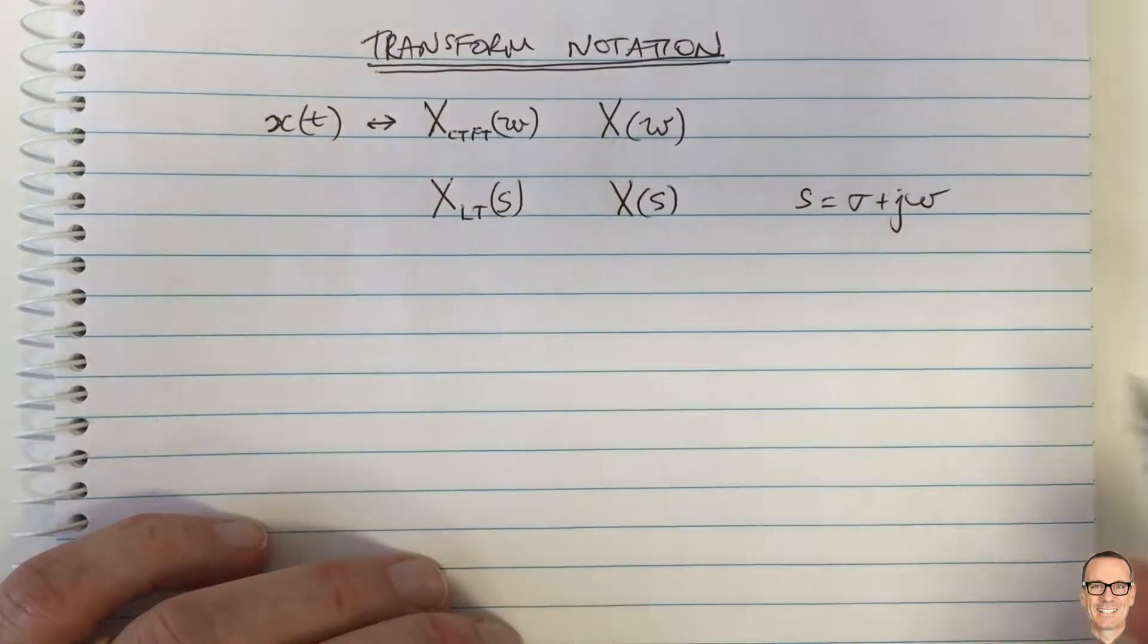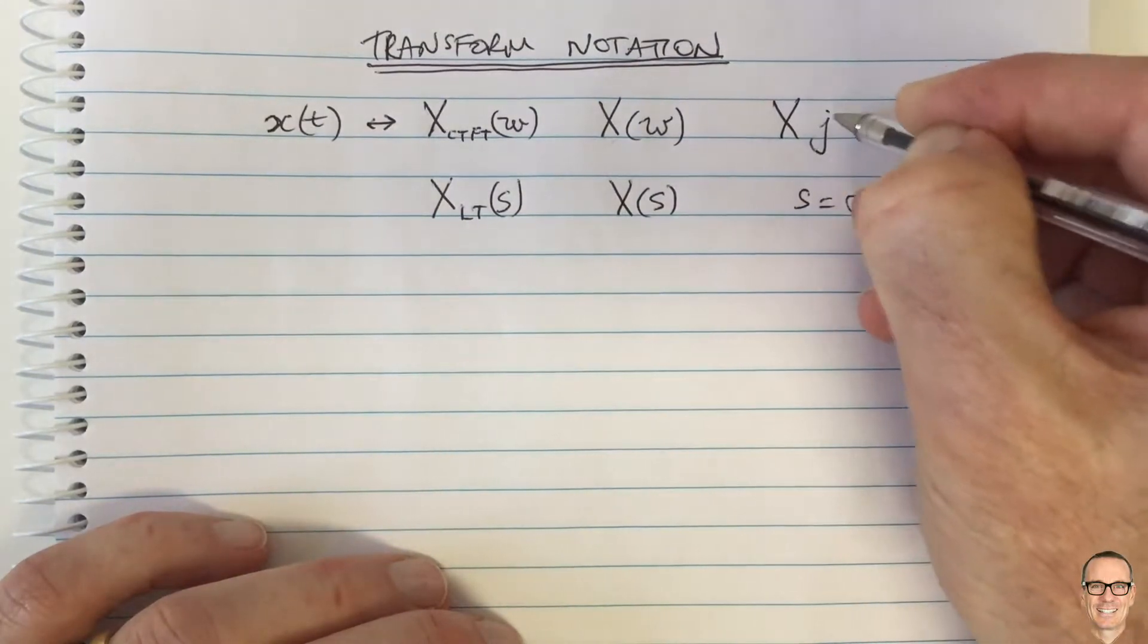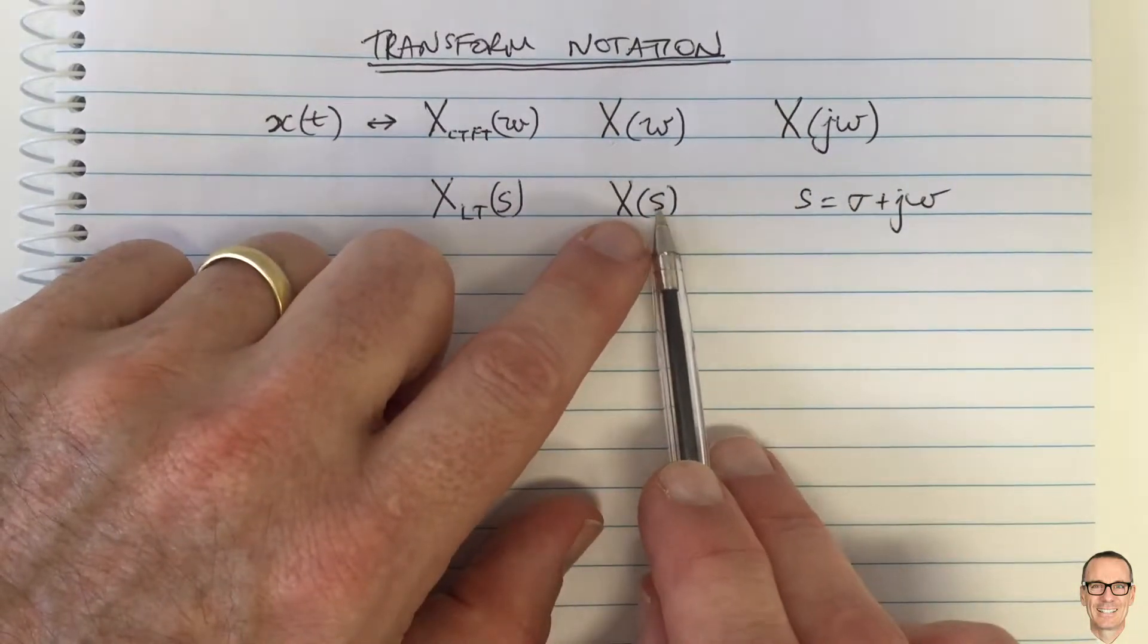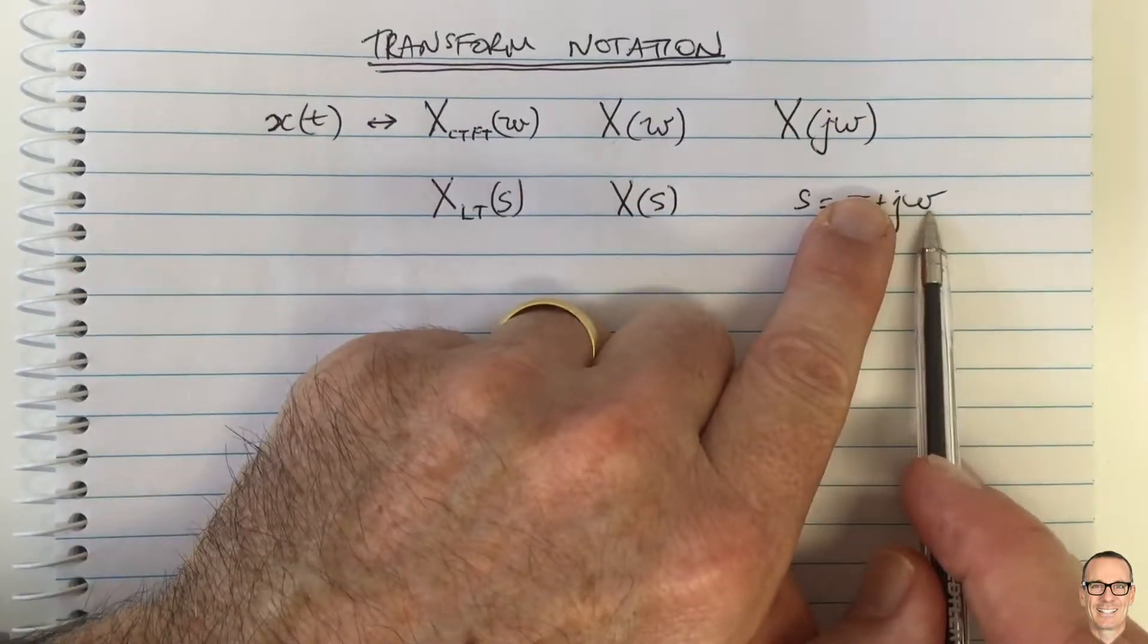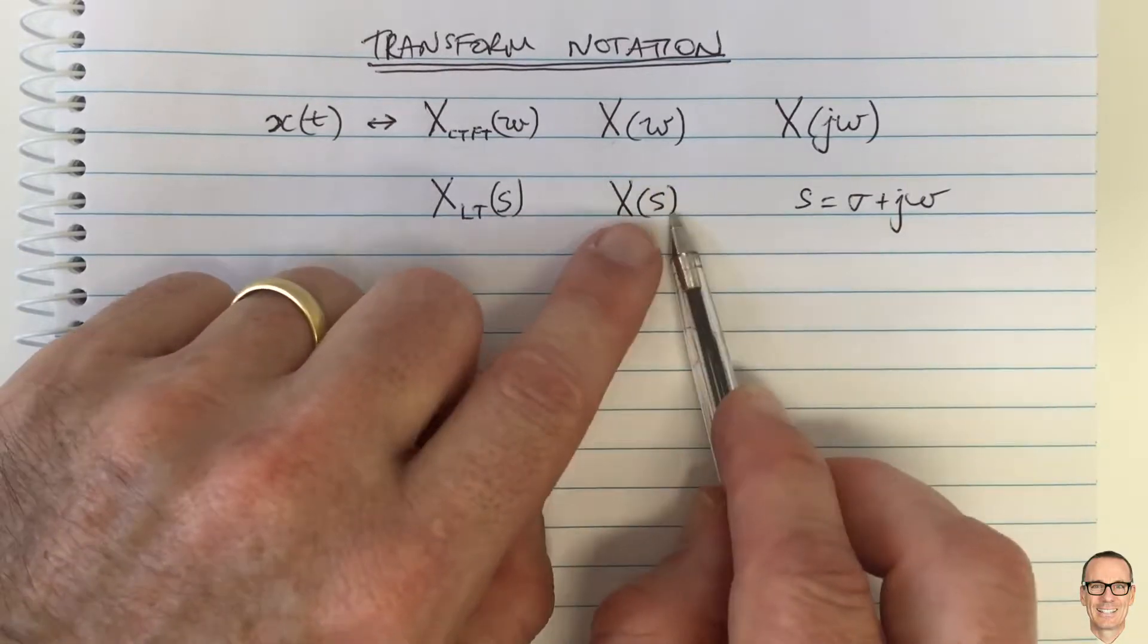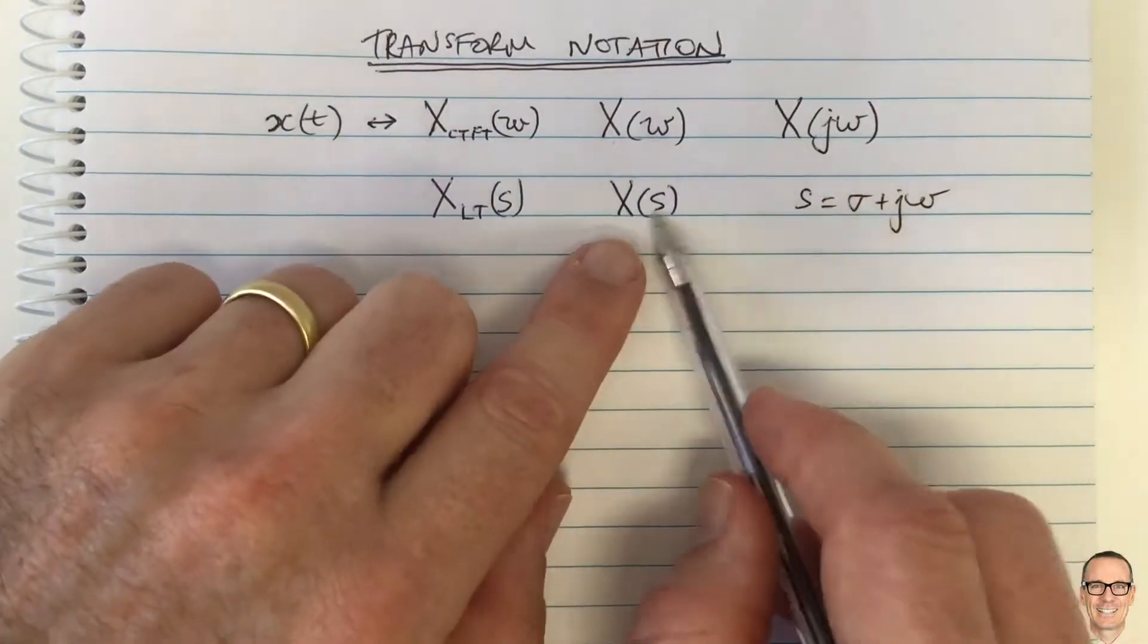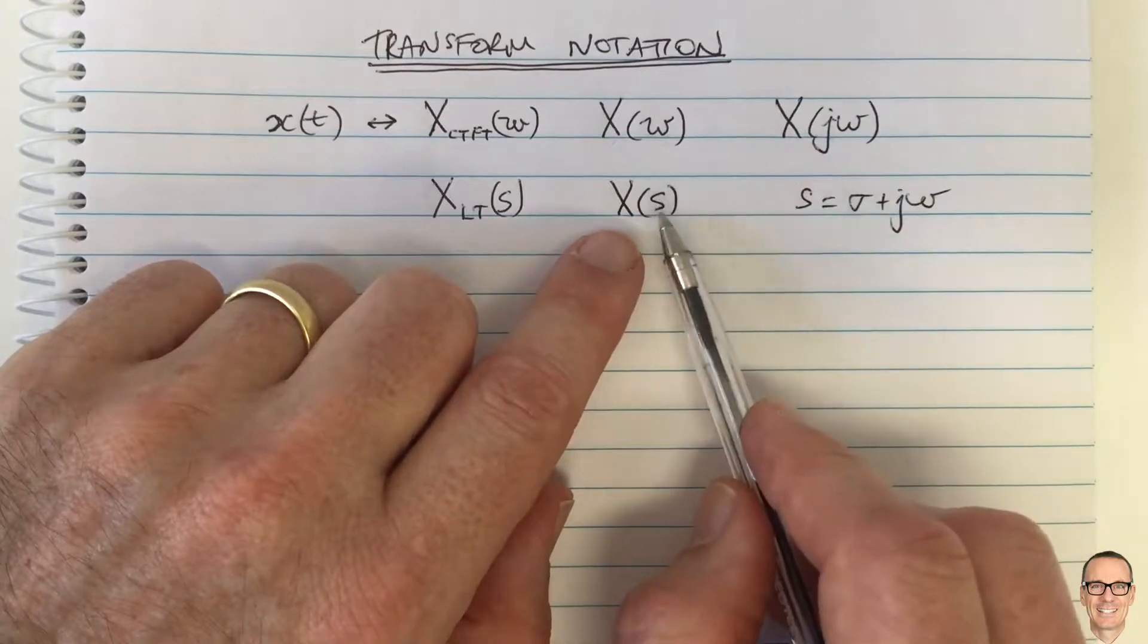to help try to avoid confusion, you'll see that this is written, the Fourier transform is sometimes written as x of j omega. Because it's when you've got s with sigma equals zero, you've just got j omega, and that is the Fourier transform. So if you take the Laplace transform, and you set sigma equal to zero, then you actually do have the Fourier transform. And so sometimes the Fourier transform is written with the j to indicate that it is a Fourier transform.